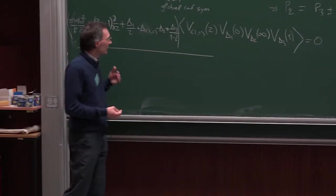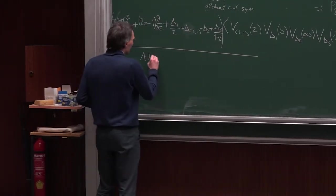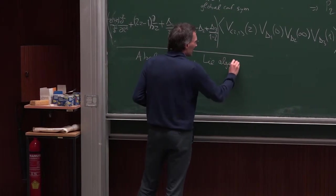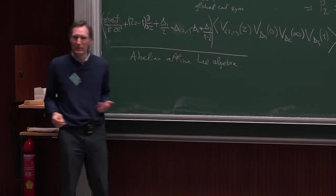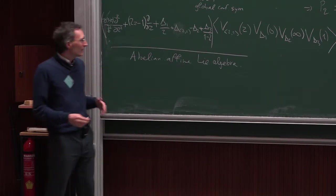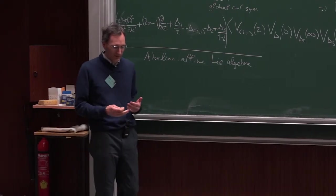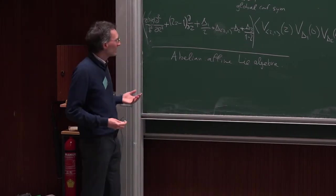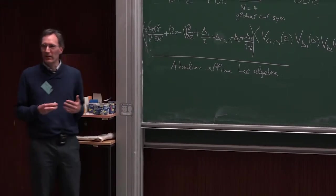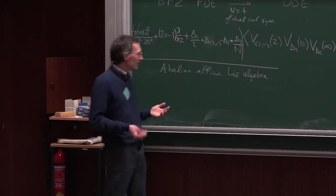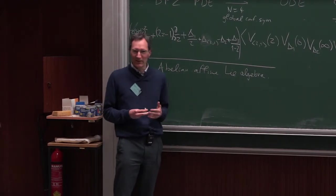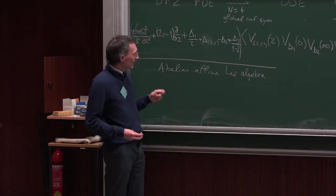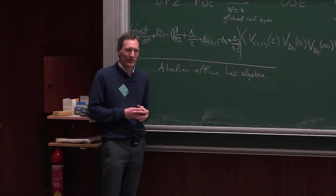So far we've talked only about the Virasoro algebra, but in many interesting conformal field theories we have larger symmetry algebras, as we started to see with the Wess-Zumino-Witten models. I would like to give an idea of how this formalism is generalized to larger symmetry algebras. I'm talking about abelian affine algebras — a simplified version — the simplest symmetry algebra we could write.